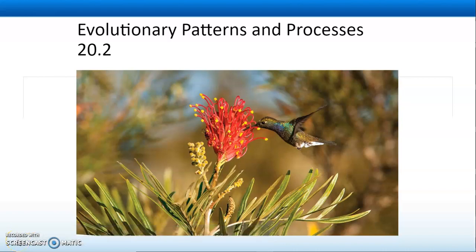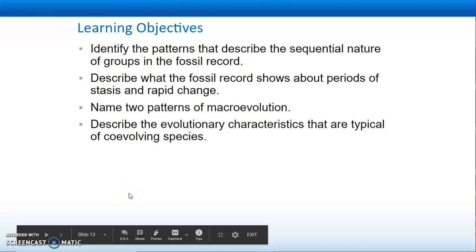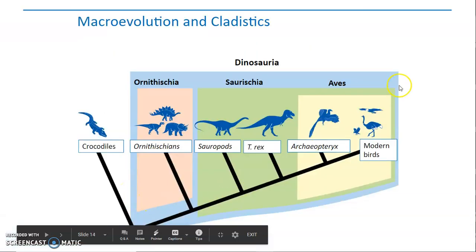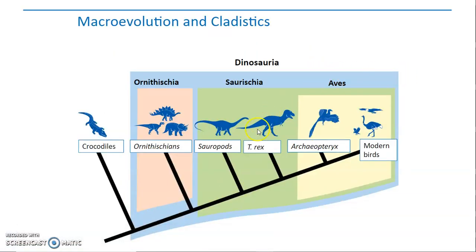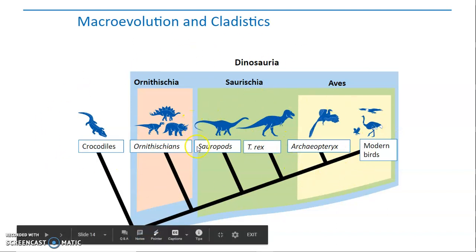Hey guys, welcome back. This is going to be 20.2 Evolutionary Patterns and Processes, so let's zoom through the learning objectives. Alright, so macroevolution and cladistics. We've looked at cladograms - you should be able to read those.